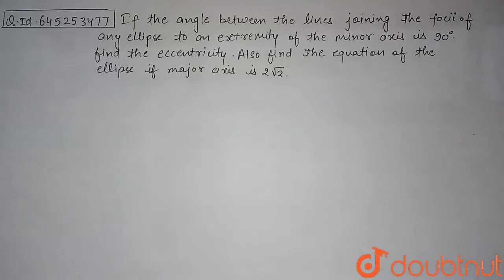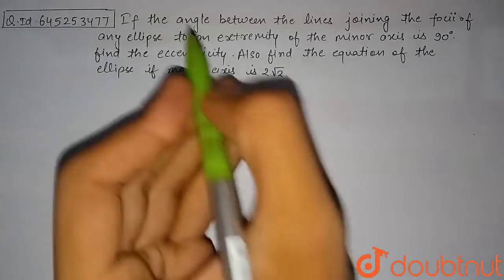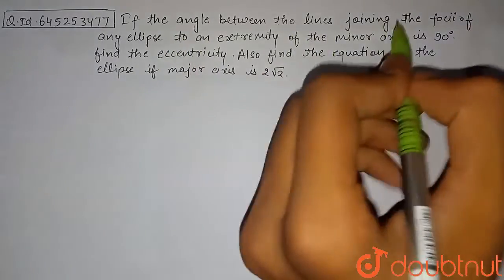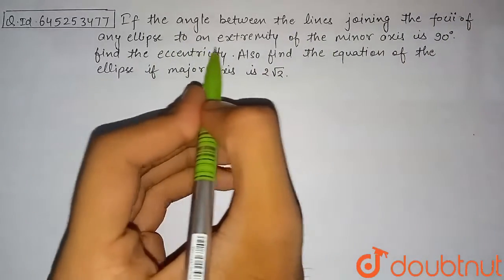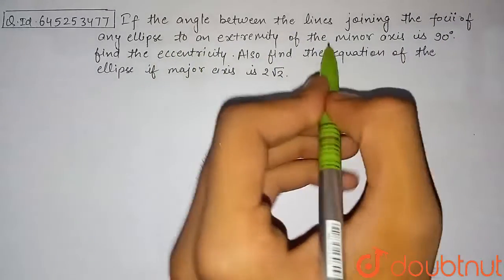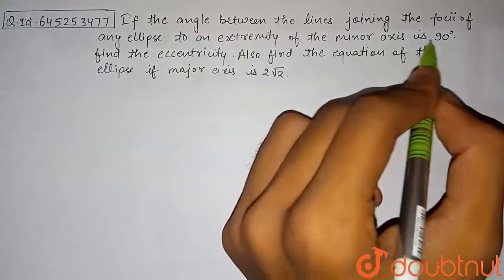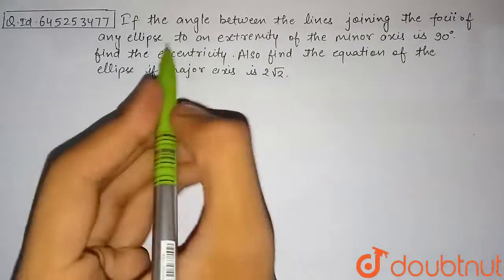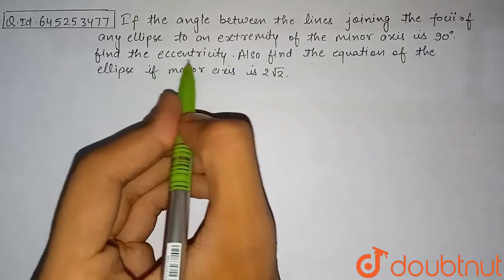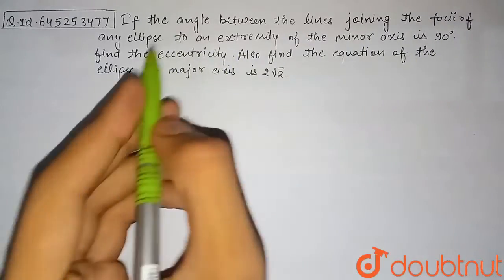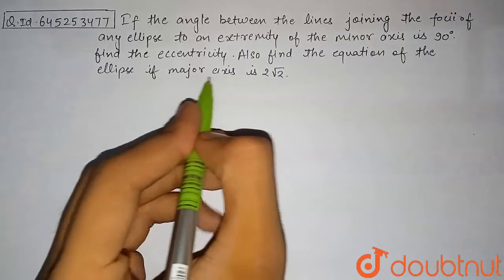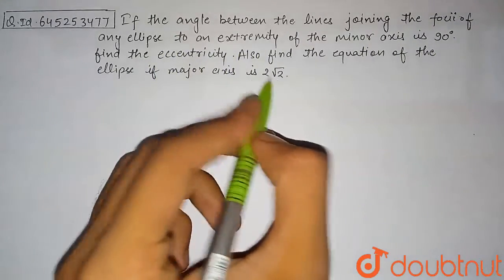Hello students, let's discuss the question. If the angle between the line joining the foci of any ellipse to an extremity of the minor axis is 90 degrees, find the eccentricity. Also find the equation of the ellipse if the major axis is 2√2.